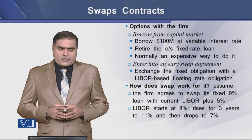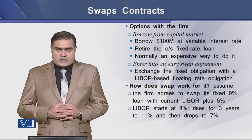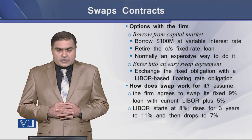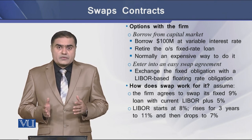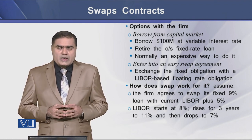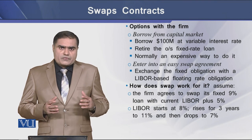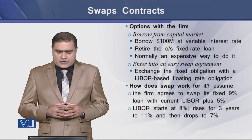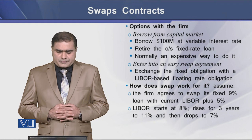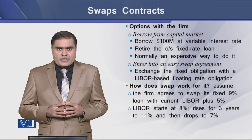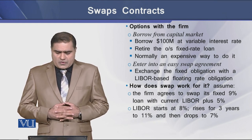The second option for the firm is to enter into a swap agreement. In this way the firm can exchange its fixed rate obligation with a variable, for example LIBOR-based floating rate obligation. Now let's see how this swap agreement will work for the firm.